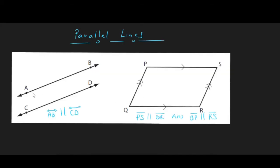Parallel lines are lines which are the same distance apart when you extend the lines to infinity, so they never meet. In this example, line AB is parallel to line CD. In example 2, line PS is parallel to line QR and line QP is parallel to line RS. In this parallelogram, sides with the same number of arrows are parallel — PS and QR each have one arrow, while QP and RS each have two arrows.